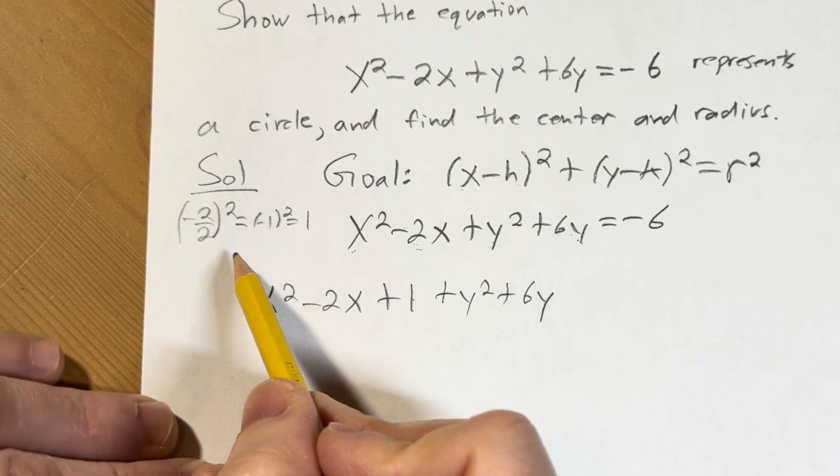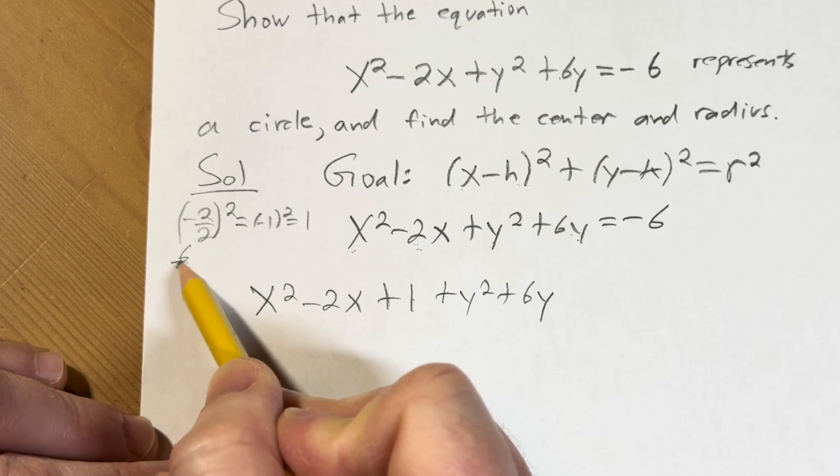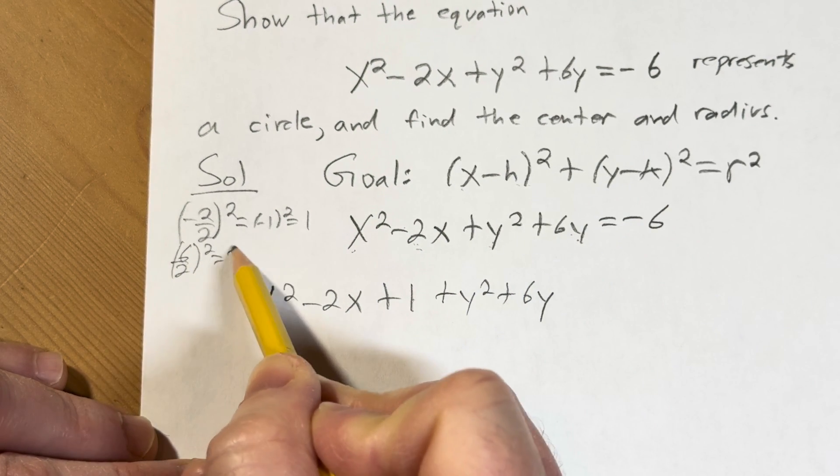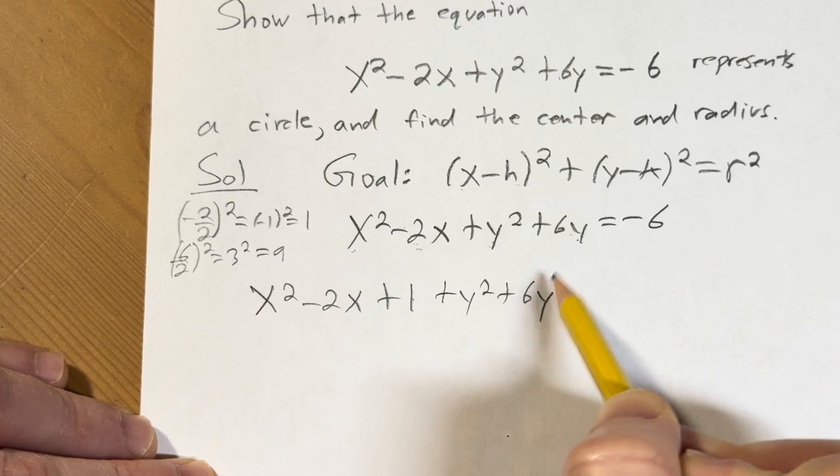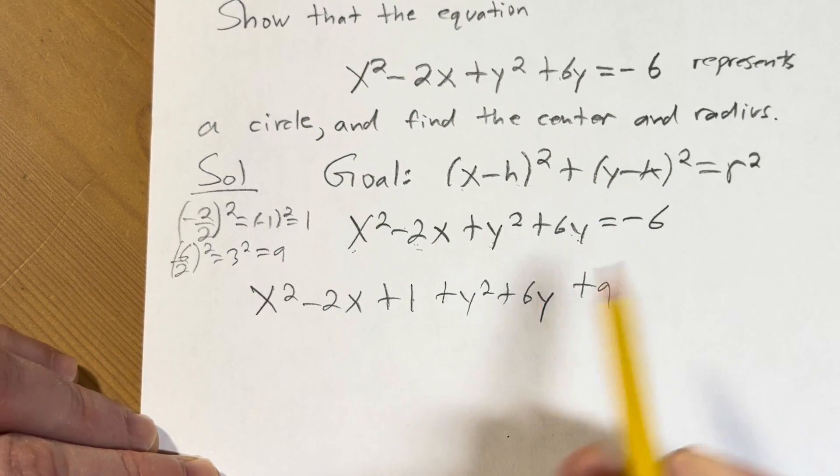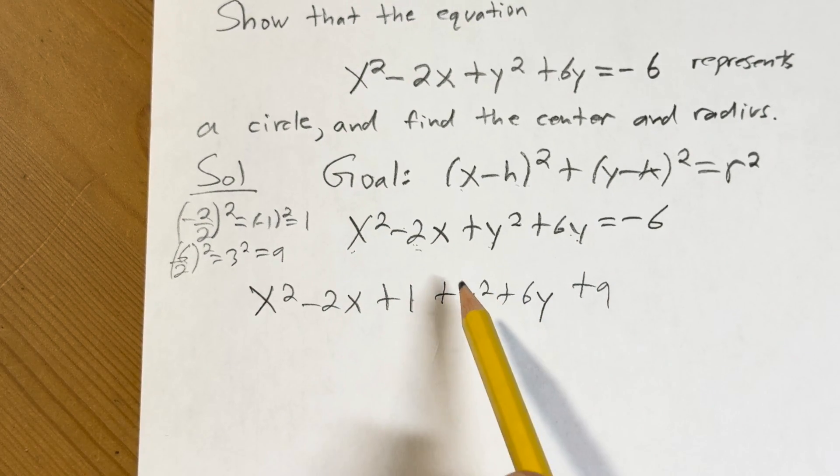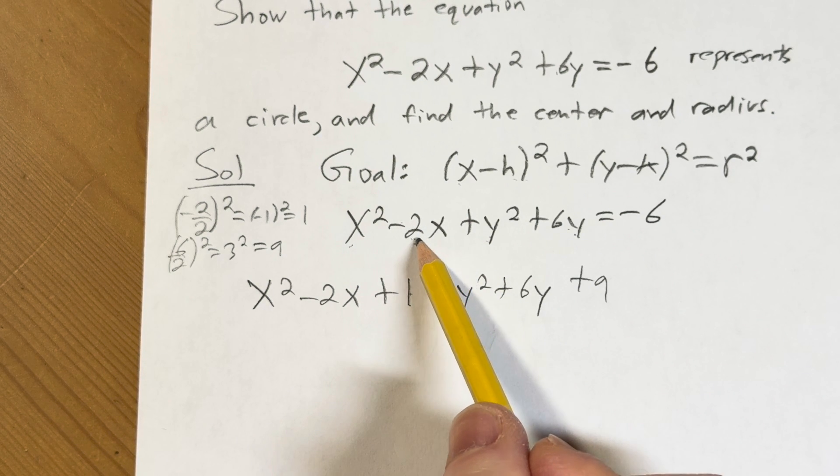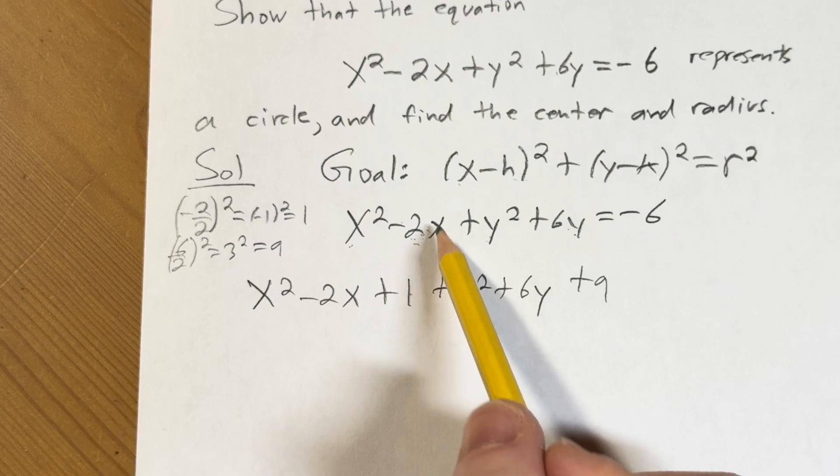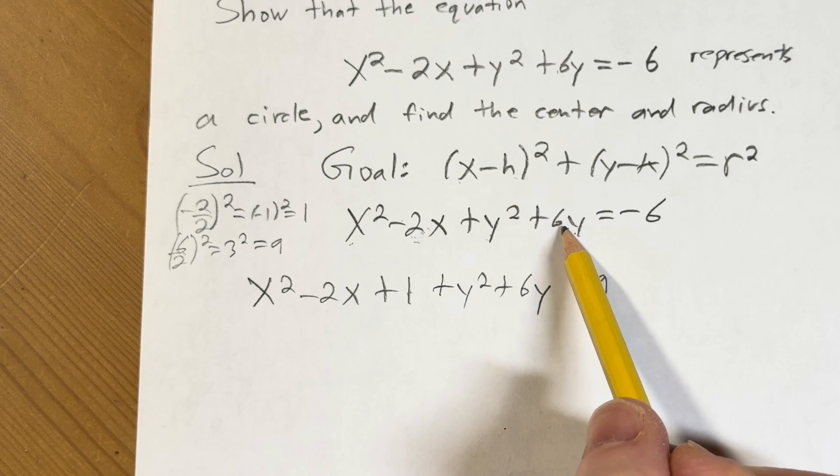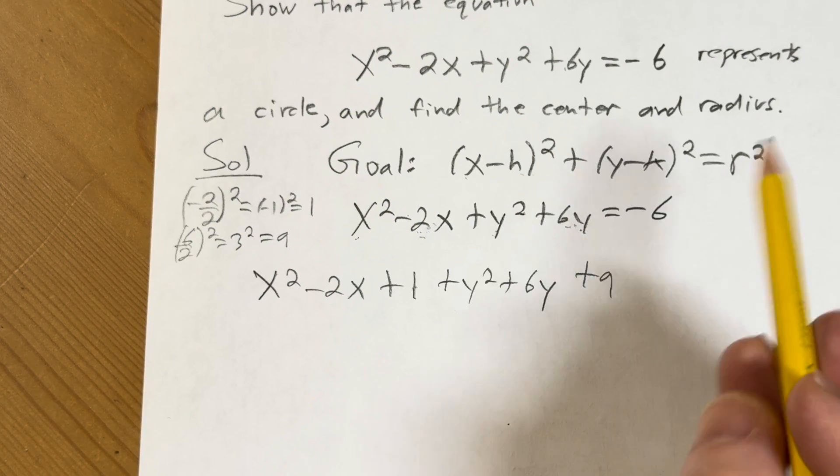Take the coefficient of y and square it, so it'll be 6 over 2 already squared, just like that. Boom. Okay, so you could do it in your head basically after a while, right? So you just take the coefficient of x, divide it by 2 and square it. Negative 2 over 2 is negative 1, negative 1 squared is 1. Boom, there it is. 6 over 2 is 3, 3 squared is 9. Boom, there it is.